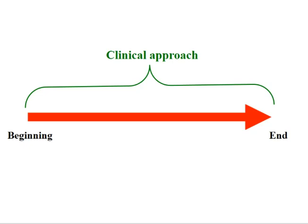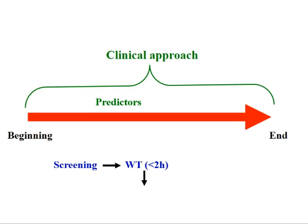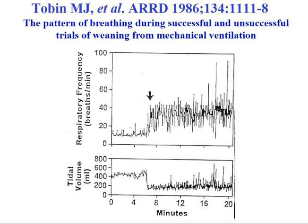If the patient tolerates this challenge, we proceed with extubation. This is the trajectory of mechanical ventilation from the beginning to the end. I'm going to focus on the first part — screening patients — and to help us in this step we use predictors. Once we have a positive test, we go to the weaning trial with a duration of maximum a couple of hours. If the patient fails, we reconnect that subject to the ventilator and proceed with a progressive withdrawal of support until extubation is accomplished later on.